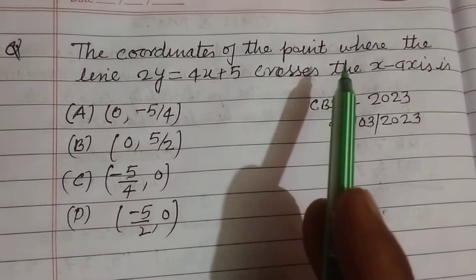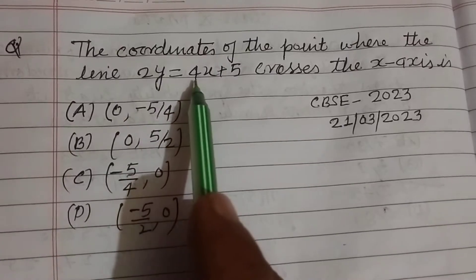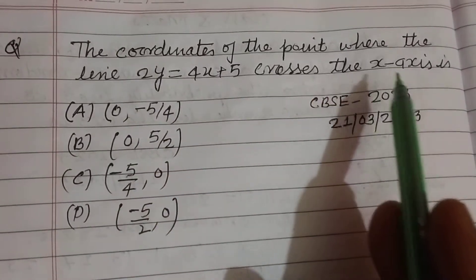The coordinate of the point where the line 2y equals 4x plus 5 crosses the x-axis is.